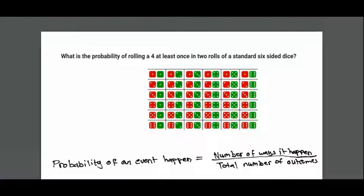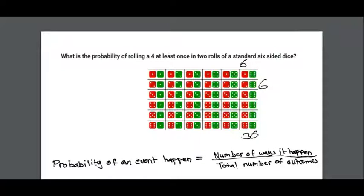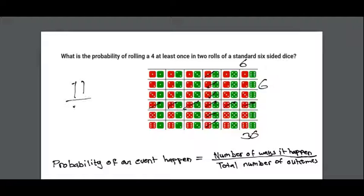What is the probability of rolling a four at least once in two rolls of a standard six-sided die? Each roll has six possible outcomes, so the possible outcomes in two rolls is 6 by 6, which equals 36. Counting the number of outcomes with at least one four gives 11 outcomes. The probability of rolling a four at least once is 11 over 36.